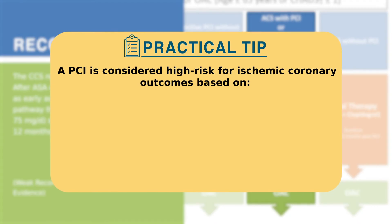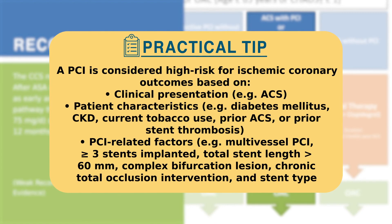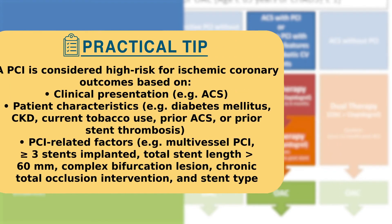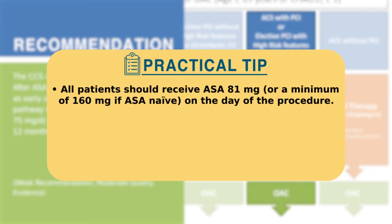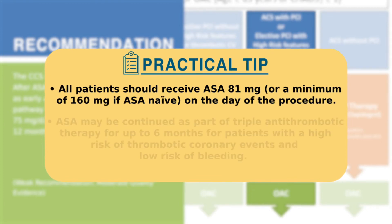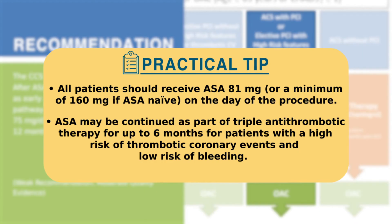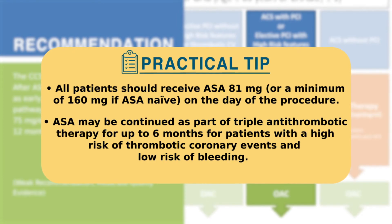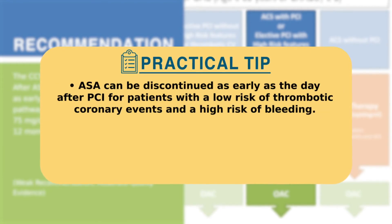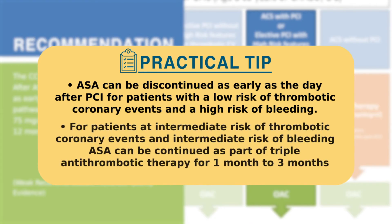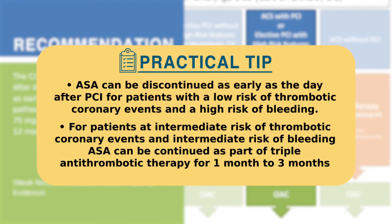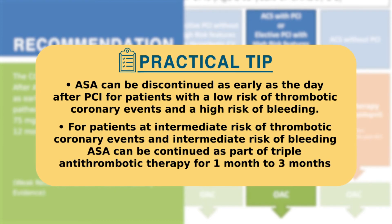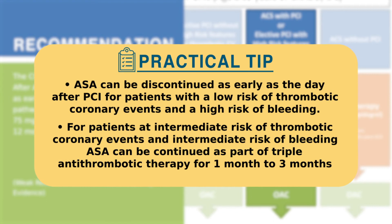A PCI is considered high risk for ischemic coronary outcomes based on the factors listed here. All patients should receive ASA at a dose of 81 mg, or a minimum of 160 mg if they are ASA naive, on the day of the PCI procedure. ASA may be continued as part of triple antithrombotic therapy for up to six months for patients with a high risk of thrombotic coronary events and low risk of bleeding, or discontinued as early as the day after PCI for patients with a low risk of thrombotic coronary events and a high risk of bleeding. For patients at intermediate risk of both thrombotic coronary events and bleeding, ASA can be continued as part of triple antithrombotic therapy for one to three months.